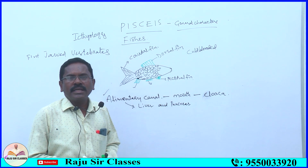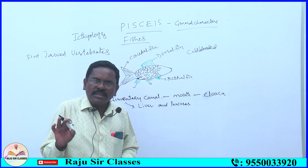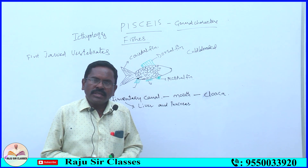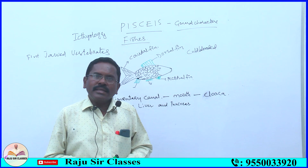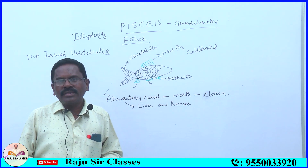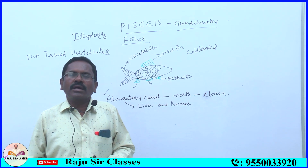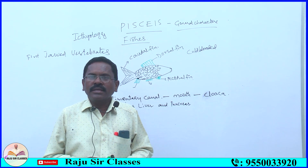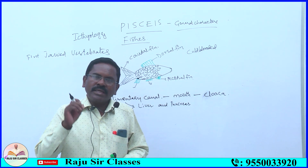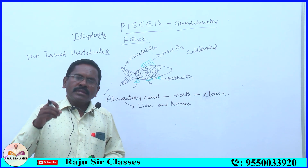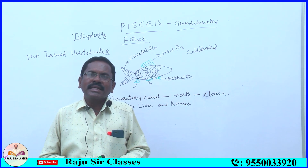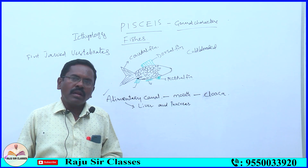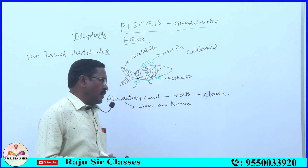The type of digestion is extracellular digestion. Digestion is of two types: intracellular digestion and extracellular digestion. Intracellular digestion occurs within the cell. Extracellular digestion takes place outside the cell, between cells, or in different parts of the alimentary canal. Extracellular digestion is also known as intercellular digestion.